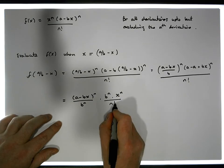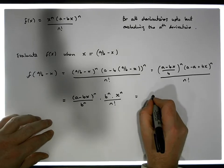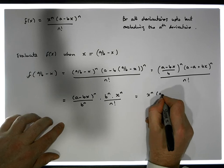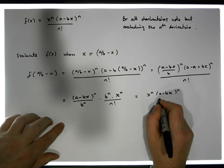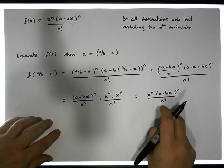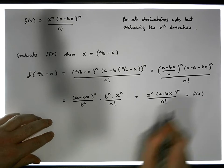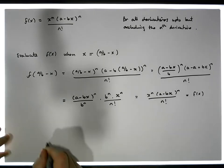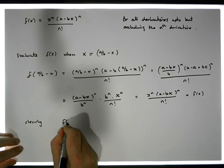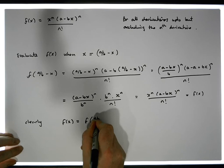So what we end up with is x^n times (a - bx)^n, all over n factorial — commuting the two terms — which is f(x). So clearly, f(x) equals f evaluated at (a/b - x). These two things are now equal.